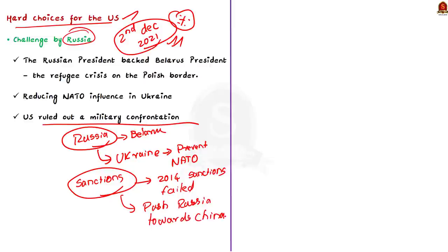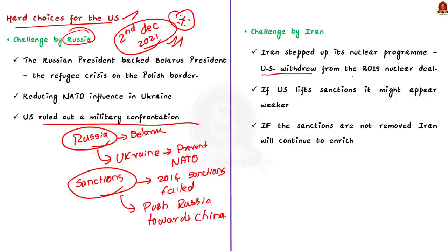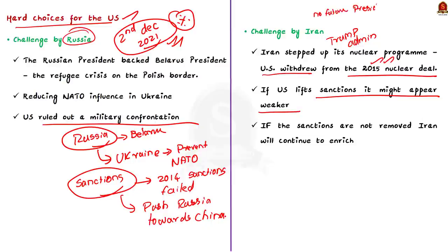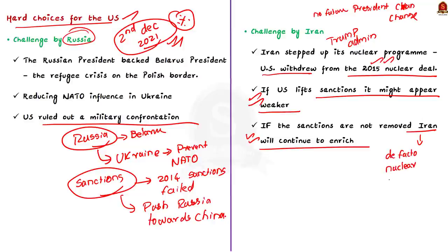Now let us look at Iran. Iran has stepped up its nuclear program after the Trump administration unilaterally withdrew the United States from the 2015 nuclear deal. The Biden administration has promised to lift nuclear sanctions on Iran if it returns to the deal. But Iran insists the United States should first remove sanctions and give assurance that a future president would not violate the terms of the agreement. If the United States lifts the sanction, it could be interpreted as a sign of weakness. If it does not, Iran could continue to enrich uranium to a higher purity and become a de facto nuclear power without having a nuclear bomb — like Japan.